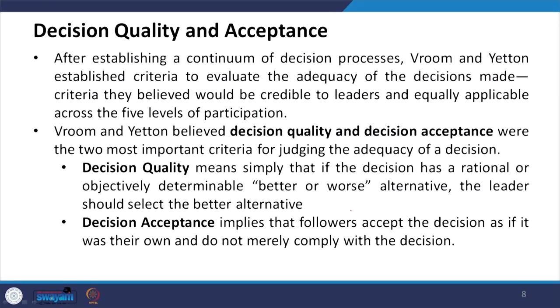Vroom and Yetton believed decision quality and decision acceptance were the two most important criteria for judging the adequacy of a decision. Decision quality means that if the decision has a rationally or objectively determinable better or worse alternative, the leader should select the better alternative based on all information provided by the group.